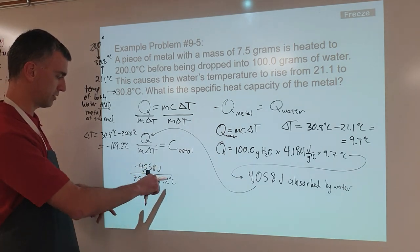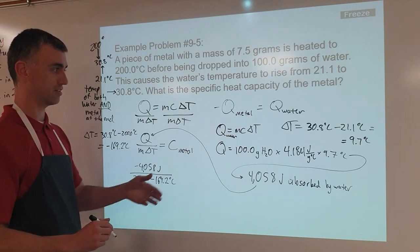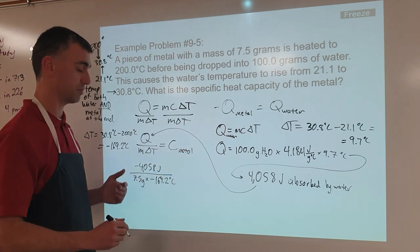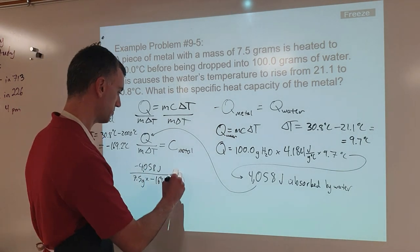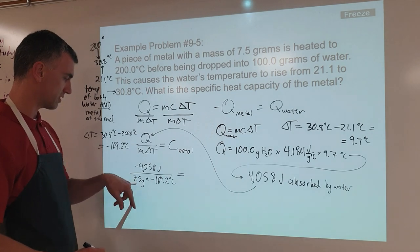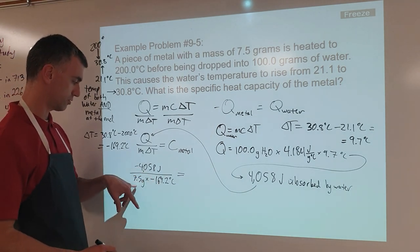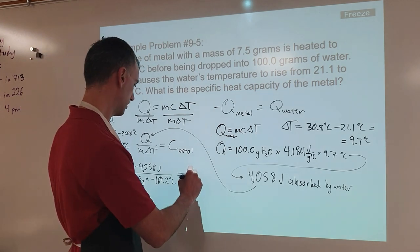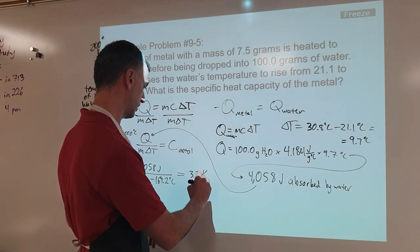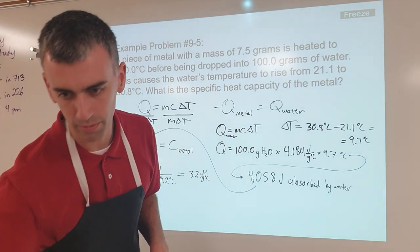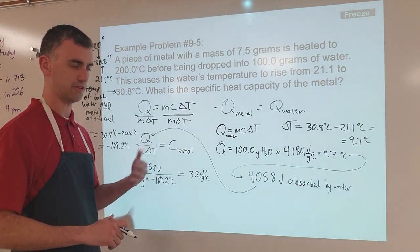So there you go — joules per gram degree Celsius — this will give the correct units for specific heat capacity, which has units of joules per gram degree Celsius, or calories per gram degree Celsius if you're using calories. When you do this math and round for sig figs — that's four, four, and two sig figs, so we round to two significant figures — it comes out to 3.2 joules per gram degree Celsius for this fictitious metal.